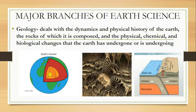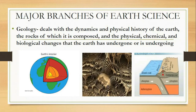The major branches of earth science include geology, which deals with the dynamics and physical history of the Earth, the rocks of which it is composed, and the physical, chemical, and biological changes that the Earth has undergone or is undergoing. The picture shows the different layers of the Earth, fossils, and the converging of the oceanic crust and the continental crust.